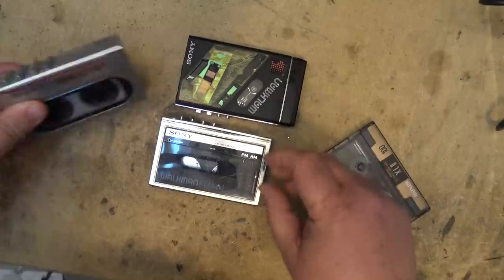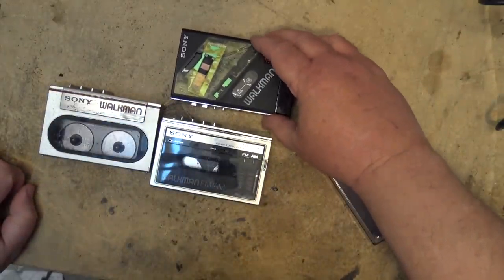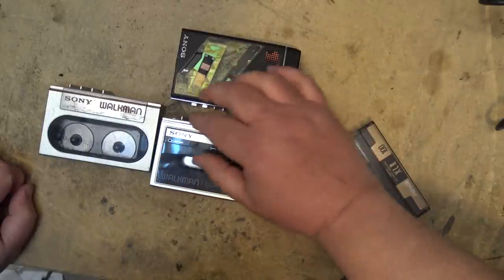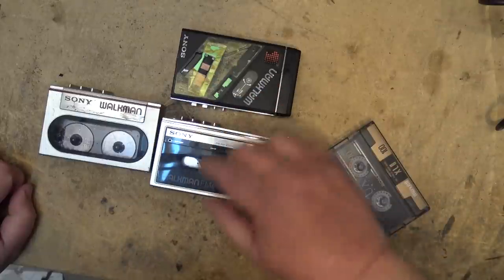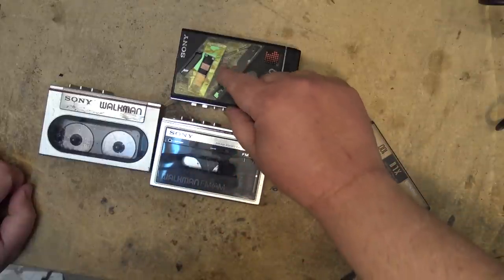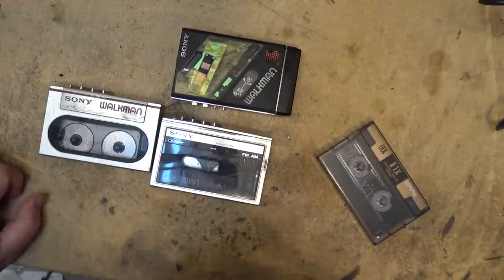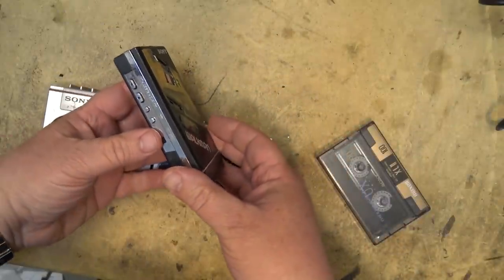Yeah, this one had Dolby, Dolby B. And this one here is the WM-F100. Unfortunately, one of the pieces that goes over here that's got the frequency label on it, which is stuck on with double-sided tape, has fallen off, and I don't know where it is. I don't know if this one works or not. I don't know if any of these work, actually.